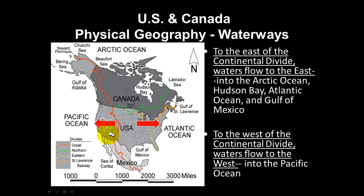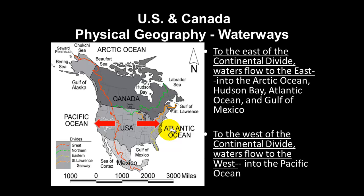Understanding the Continental Divide helps you understand trade and how civilizations and cultures developed, because early ancient man had to go where the water flowed. If the water only flowed to the west, then travel and settlement could only move in that direction. This was critical for people traveling by canoe and other non-motorized transport, long before modern transit existed.